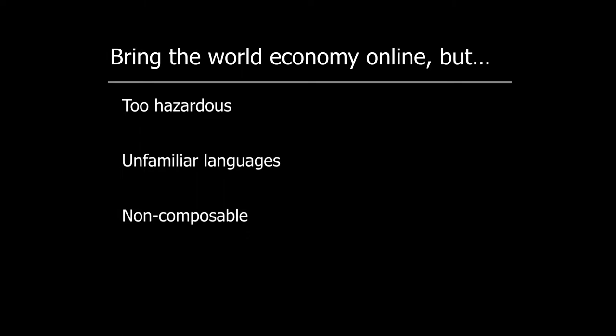The primitives that the smart contracts are built out of are non-composable. So the smart contracts themselves do not compose well, and the result is that they don't form the kinds of rich networks of contractual relationships that are necessary to mirror the complexity of the real-world economy.